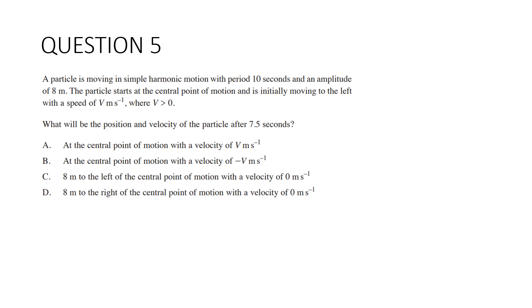Question 5. A particle is moving in simple harmonic motion with period 10 seconds and amplitude of 8 meters. The particle starts at the central point of motion and initially moving to the left with a speed of v meters per second. What would be the position and velocity after 7.5 seconds? We're going to start with a model. We let x equal. Because we're starting at the central point and motion is around that central point, I'm going to use sine. But it's initially moving to the left, so in a negative direction. So negative sine would be most appropriate.